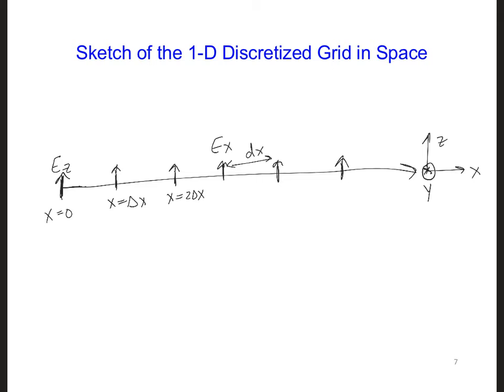Now for the partial derivatives, we positioned the H_y's at half integer locations. So I'm going to draw an arrow pointing into the screen halfway between each of these E_z's, and I'm going to label it as being H_y.